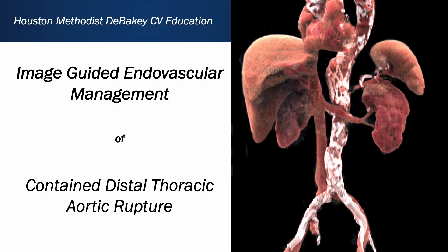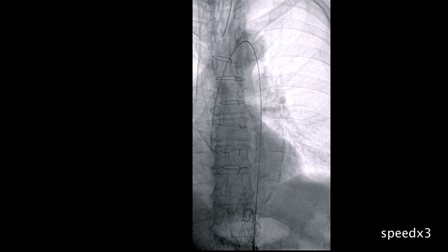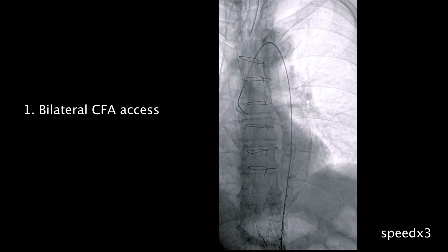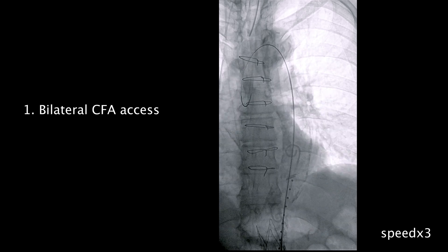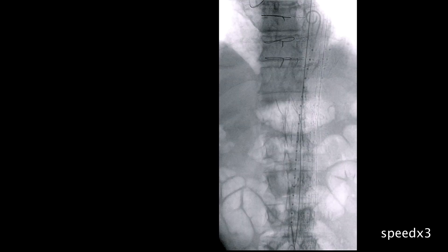During the case presentation, we are going to refer back to these key steps. First, we gained percutaneous access of the left common femoral artery under ultrasound guidance, then the right common femoral artery was exposed from femoral cut down. From the right femoral access, a stiff wire was passed to the thoracic aorta and the pigtail flush catheter was introduced from the left groin.